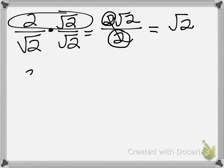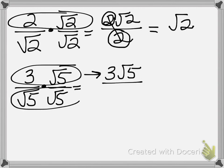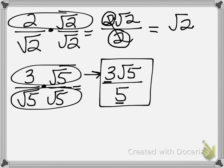Let me do one more like that: 3 divided by the square root of 5. That square root of 5 cannot stay in the denominator, so multiply top and bottom by the square root of 5. The top becomes 3 times the square root of 5, and the bottom becomes the square root of 25, which is 5. The 3 and the 5 don't reduce each other, so that's as good as you can get — it can't be reduced any further.